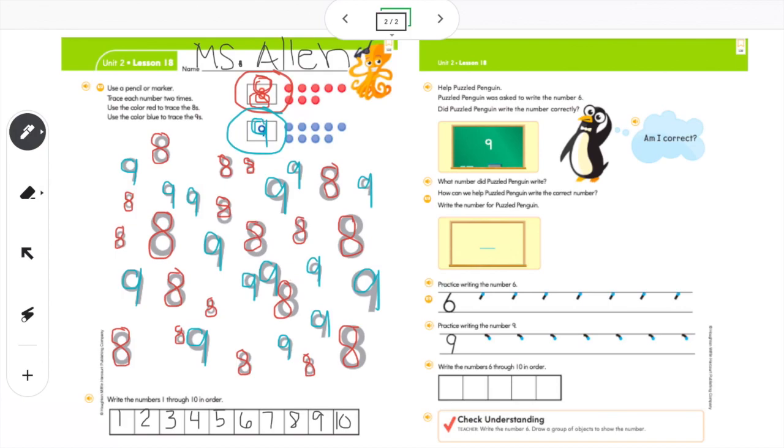When you are done writing your numbers one through ten, go ahead and flip over your page. On the back here we see Puzzled Penguin. Say hi, Puzzled Penguin. The directions tell us to help Puzzled Penguin. Puzzled Penguin was asked to write the number six. Did Puzzled Penguin write the number correctly? He's asking, am I right? Hmm.